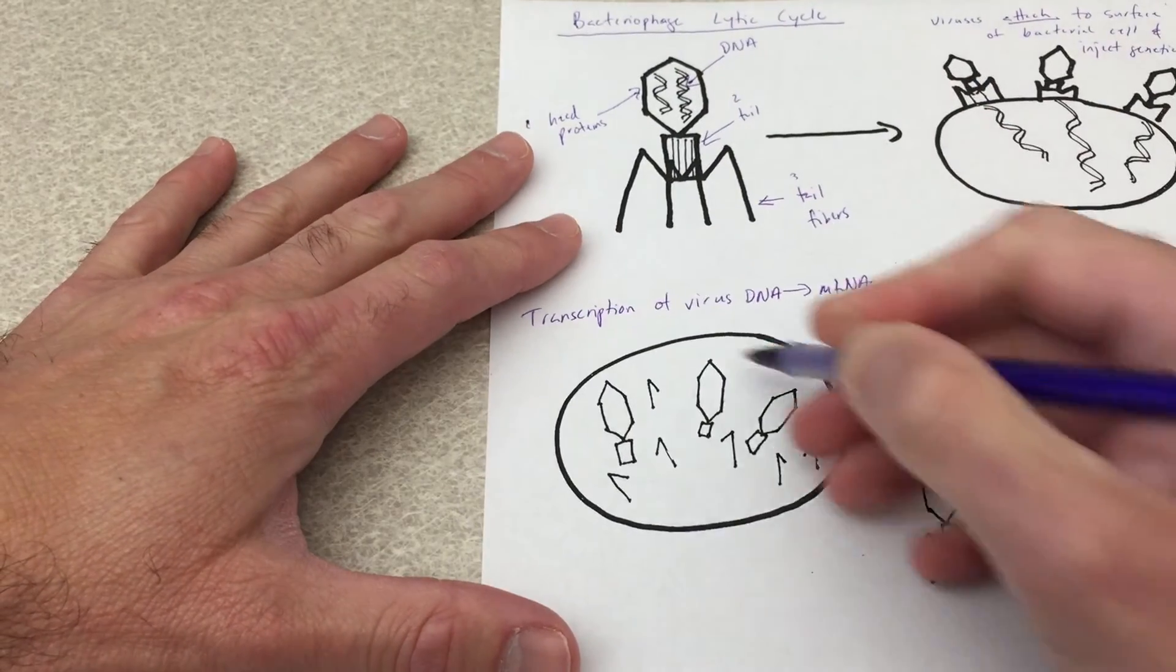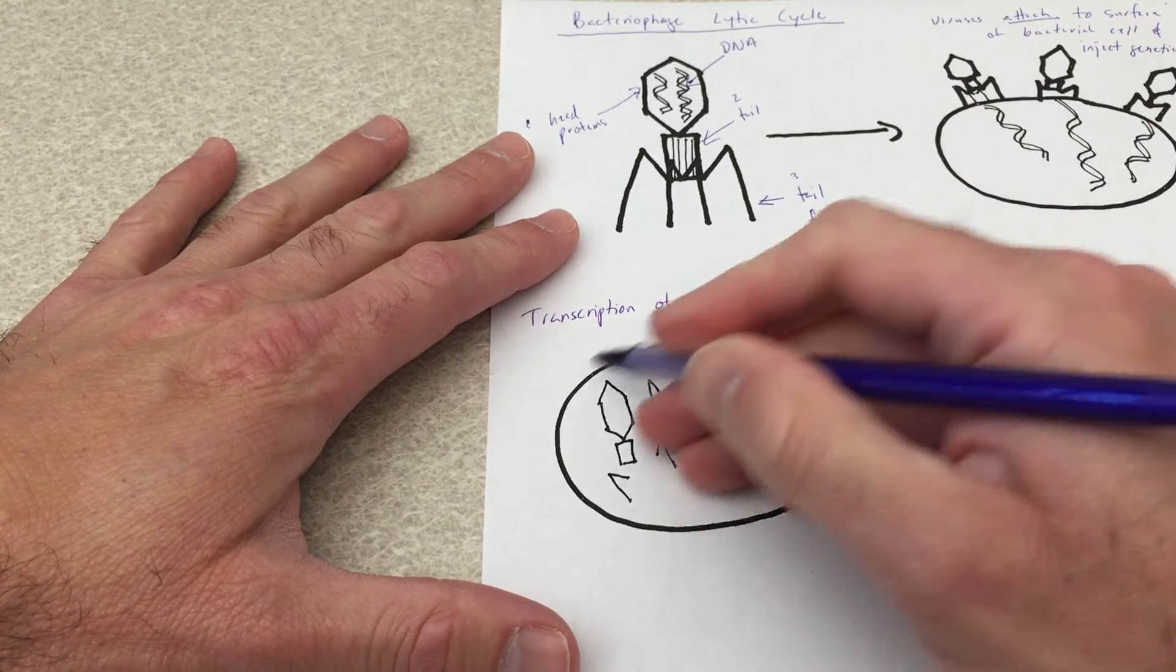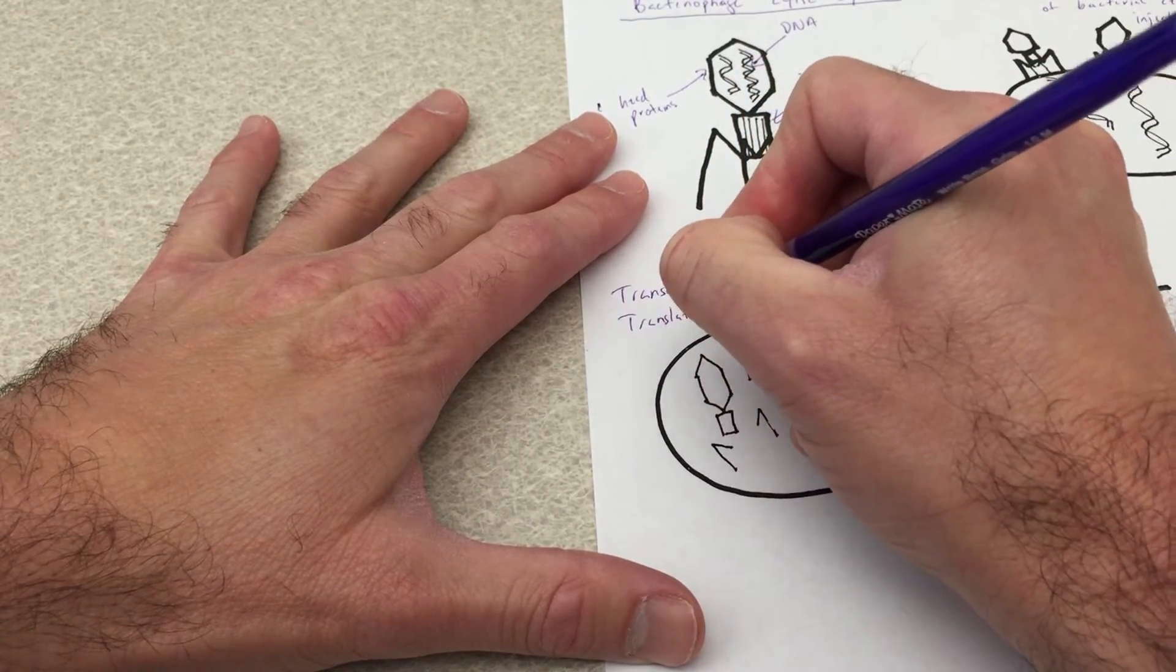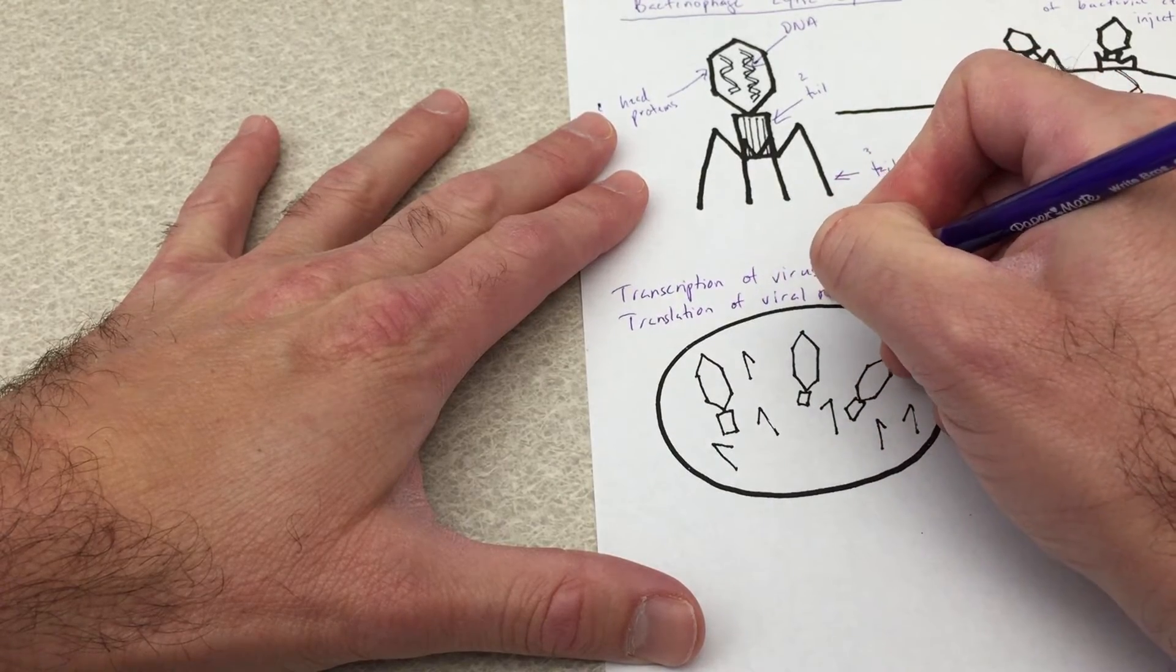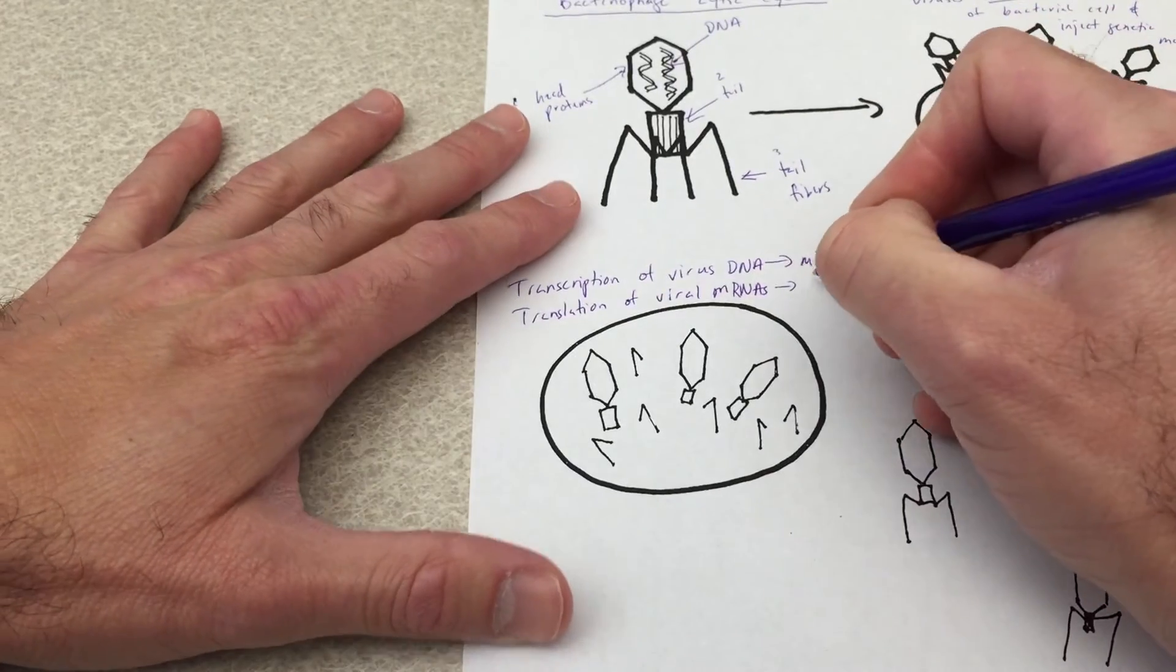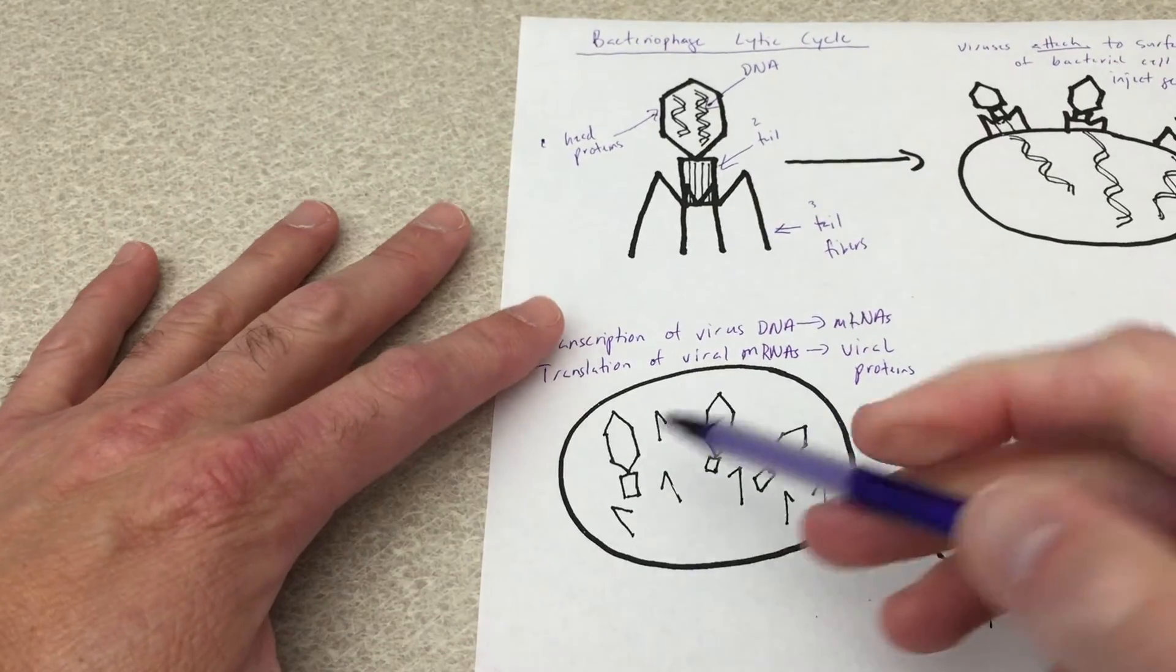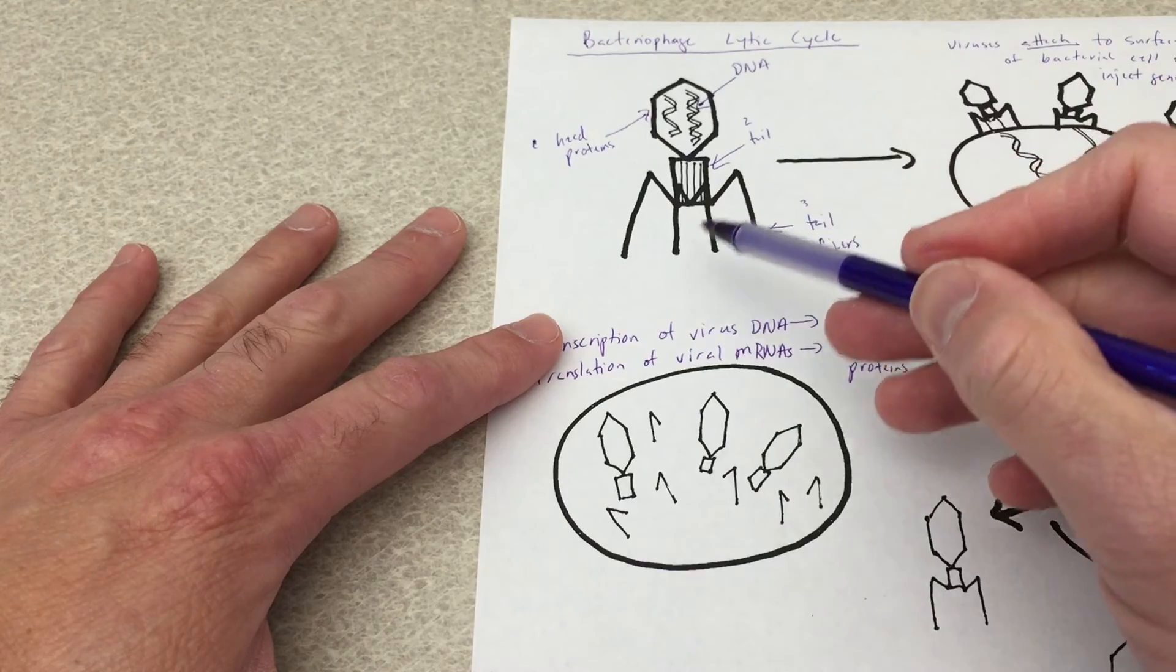And then inside of the cell, the cell is hijacked, so the host machinery is hijacked, including the ribosomes. Then translation of viral mRNAs into the viral proteins. And we can see that each of these different protein components that make up a virus are created.